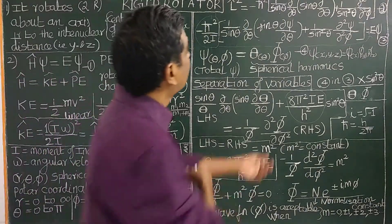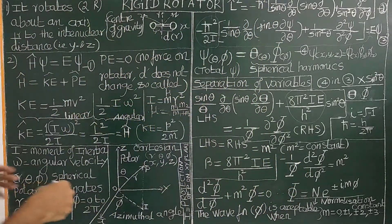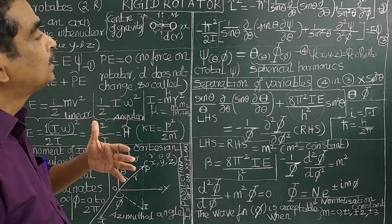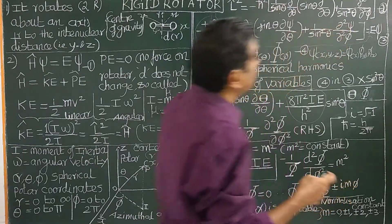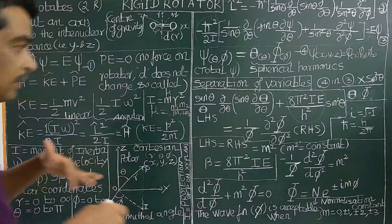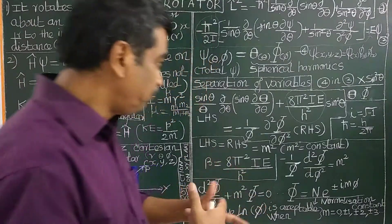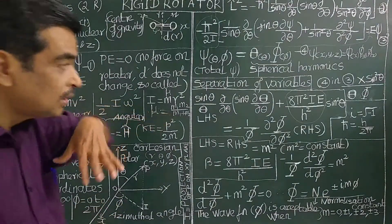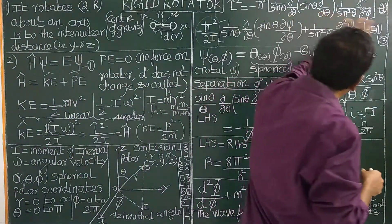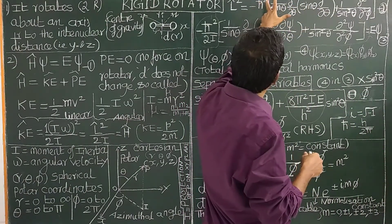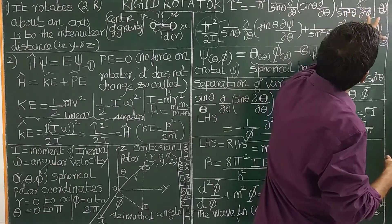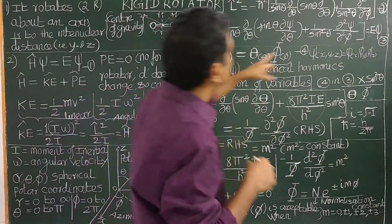In terms of spherical polar coordinates, we have already seen the angular momentum operator. The angular momentum squared operator L-cap² in spherical polar coordinates is taken from Clack's table and is written as: minus h-cross² times [ (1/sin theta)(d/d theta)(sin theta * d/d theta) + (1/sin²theta)(d²/d phi²) ]. This is equation 1 and equation 2.